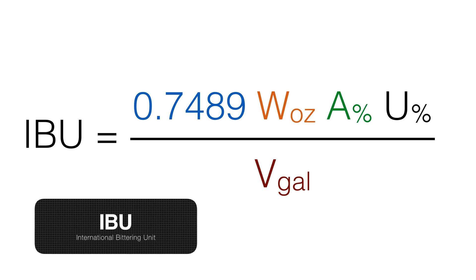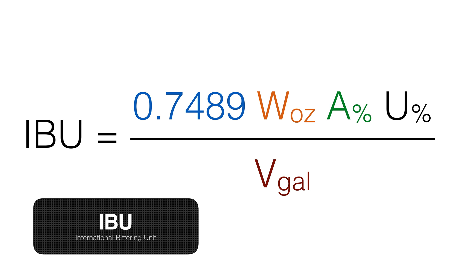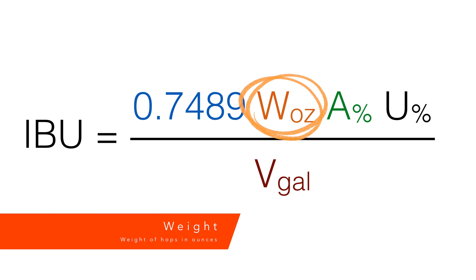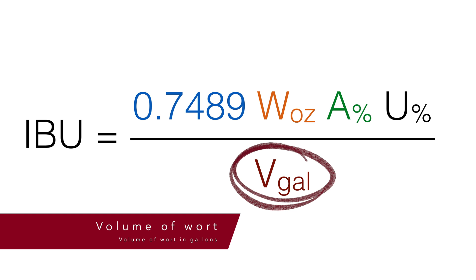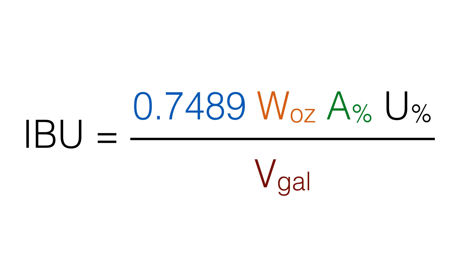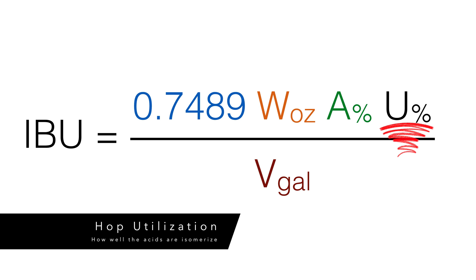In order to determine how much bitterness is contributed to our beer, we use the IBU equation. IBU stands for International Bitterness Unit. W is the weight of our hops in ounces. V is the volume of our wort in gallons. A is the percentage of alpha acids in our hops — that's usually listed on the package of the hops when you buy them. That leaves one variable left to calculate IBUs: U is for hop utilization.